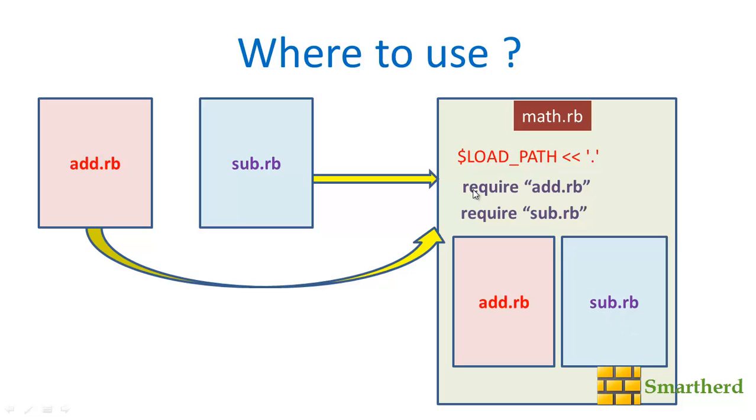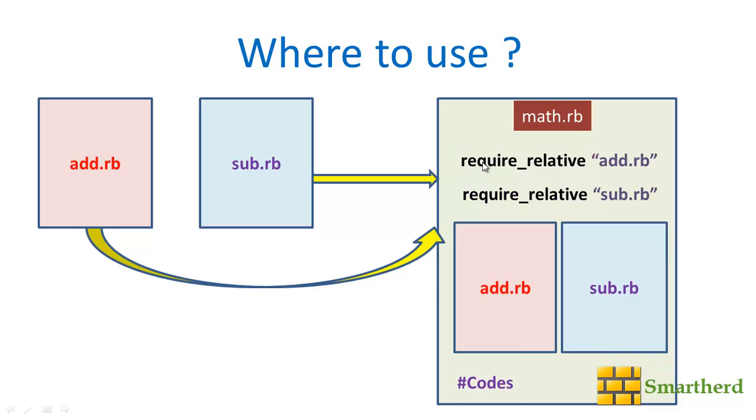Now what if we want to use require_relative? For that the syntax is very simple. Just change it like require_relative add.rb, require_relative sub.rb. No need to specify the path here because require_relative itself specifies the path of the directory where the math.rb is stored and where these two files are also stored. And here within the math.rb we can specify our codes like this.